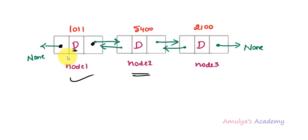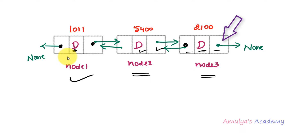Node 2 contains the data field, a link to the next node (node 3), and a link to the previous node (node 1). Node 3 contains a data field and two links: a link to the previous node (node 2) and a next node reference of none or null, because there is no node after it. So in the doubly linked list, the first node's previous reference is none and the last node's next reference is none.